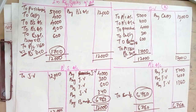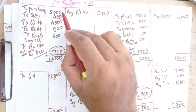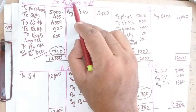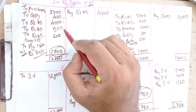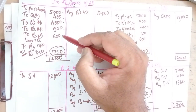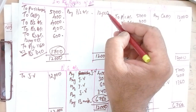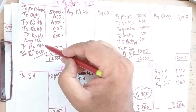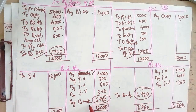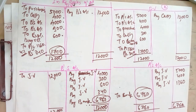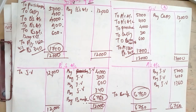If asked to pass the journal entries: joint venture account Dr to purchases; joint venture account Dr to cash; joint venture account Dr to B's account; B's account Dr to joint venture; joint venture account Dr to P&L and to B's account. The final entry for receipt: bank account Dr to joint venture. Once you prepare the ledger accounts, passing journal entries becomes quite easy.